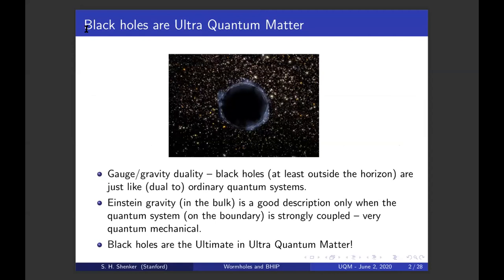We know from gauge gravity duality that black holes, at least outside the horizon, are just like ordinary quantum systems. Einstein gravity in the bulk part of this duality is a good description only when the quantum system on the boundary is strongly coupled. It's very quantum mechanical. So in some actually rather precise sense, black holes are the ultimate in ultra quantum matter.